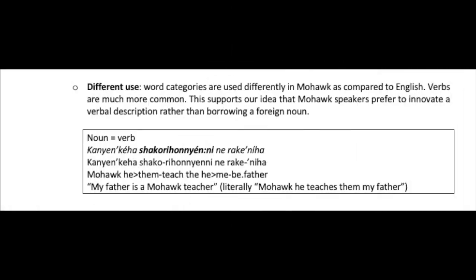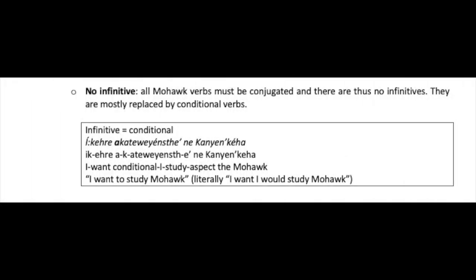Word categories are also used differently in Mohawk compared to English — verbs are much more common. Mohawk speakers prefer to innovate a verbal description rather than borrow a foreign noun. For example, 'my father is a Mohawk teacher' would literally translate as 'Mohawk, he teaches them, my father' — using the verb to teach rather than the noun teacher. All Mohawk verbs must be conjugated; there are no infinitives, which are mostly replaced by conditional verbs.